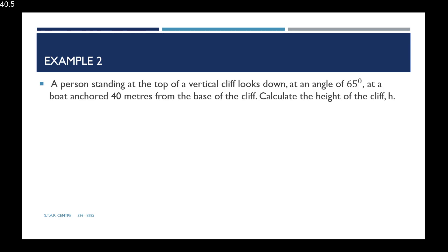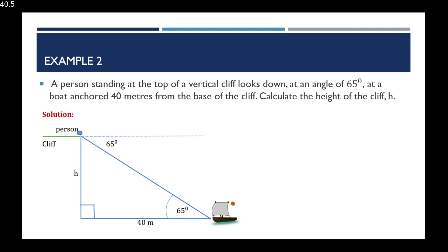Example 2: A person standing at the top of a vertical cliff looks down at an angle of 65 degrees at a boat anchored 40 meters from the base of the cliff. Calculate the height of the cliff H. It is helpful to do a sketch when a diagram is not provided. In the sketch, the green line represents the cliff, H is the height, and the person is at the top. The dotted line is the eye level, and the person looks down at 65 degrees — this is the angle of depression. Using alternate angles, this angle inside the triangle is also 65 degrees.